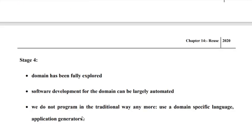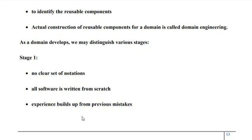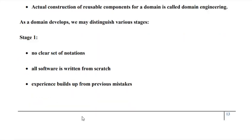In stage 4, we have completely explored the domain. The domain is completely ripe. So now what we can do is develop software applications using the domain-specific language, where we try to use application generators for generating the program instead of depending on second or third generation languages. Here we depend on fourth generation languages for generating applications. These are the various stages of evolution. As the domain matures with the lapse of time, we have a very standard way of generating software applications.